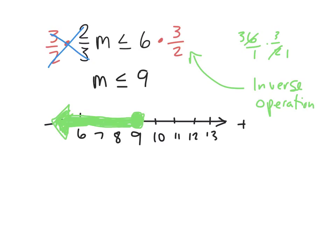Multiplying by 3/2 — that is the inverse operation for a coefficient that's a fraction. Multiply both sides by the reciprocal. Most of these problems are going to feel familiar. We're either going to divide both sides by the same number, or multiply both sides by the same number. There is one huge catch, though, and we need to discuss that.